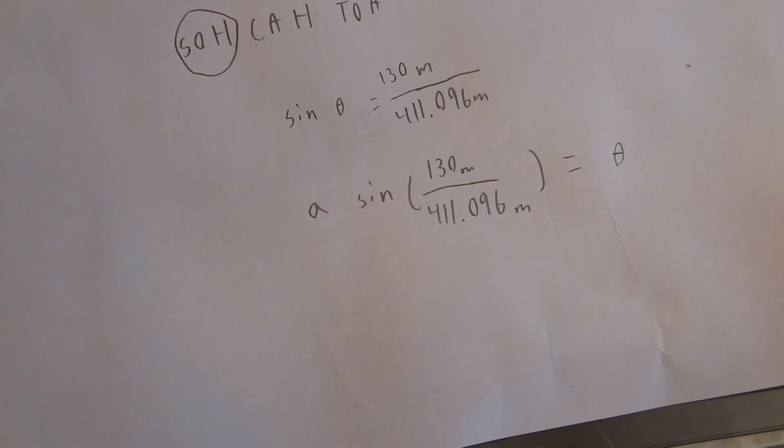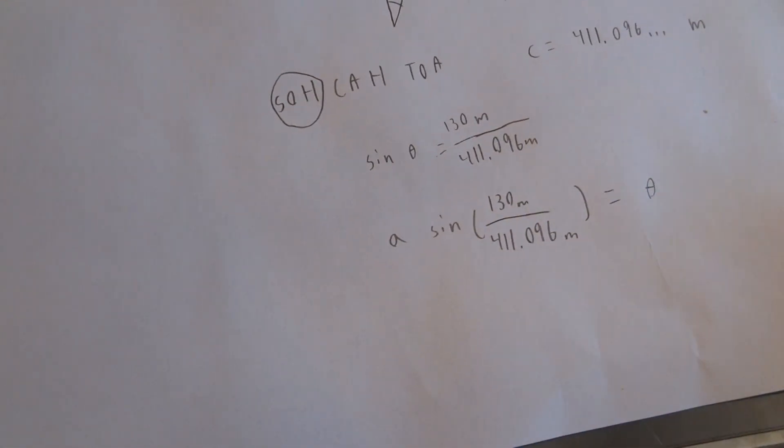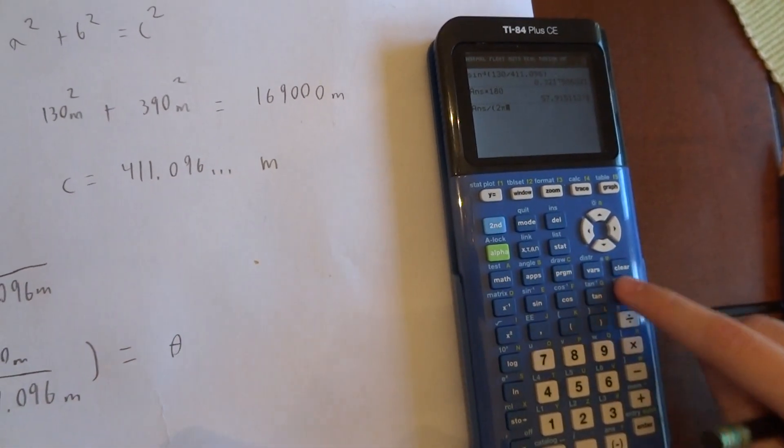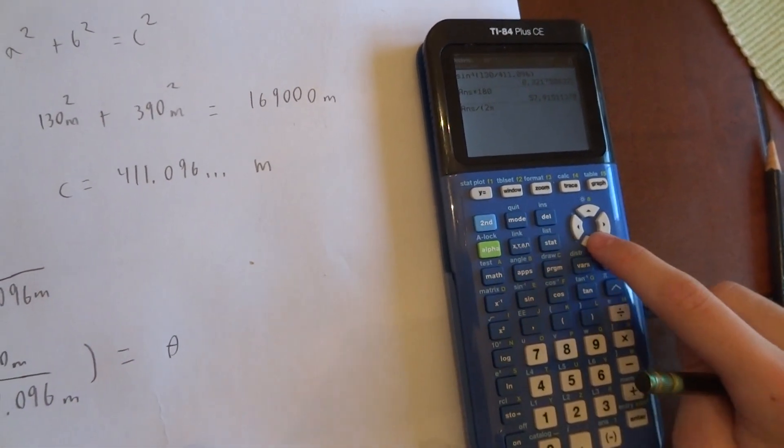And so to convert from radians we have to multiply by 180 and divide by 2π. No, I'm sorry, we have to multiply by 360 degrees.